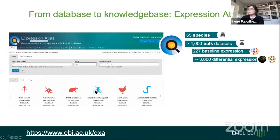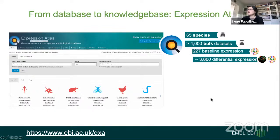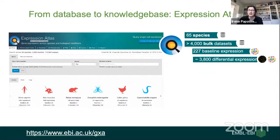This is what the Expression Atlas looks like on the front page. It contains data from 65 species; we have collected more than 4,000 bulk expression datasets from bulk RNA-seq and protein expression. Of those, 227 correspond to baseline expression — expression under normal conditions across tissues of a species. Almost 4,000 datasets come from differential expression — a contrast between, for example, healthy tissue and diseased tissue. A user can query for a gene or a biological condition such as a disease or tissue.